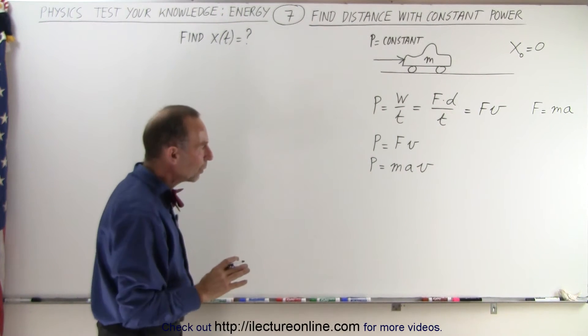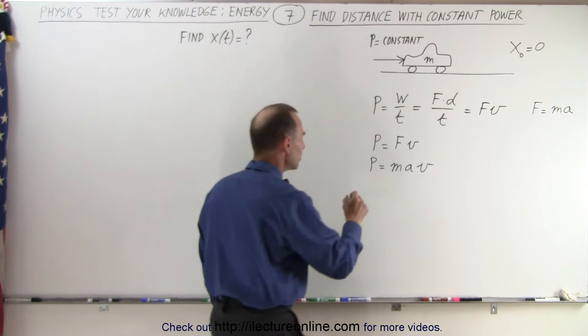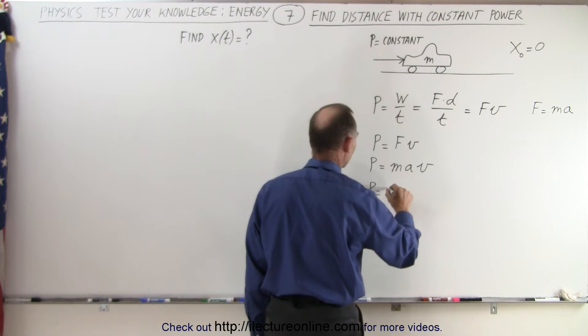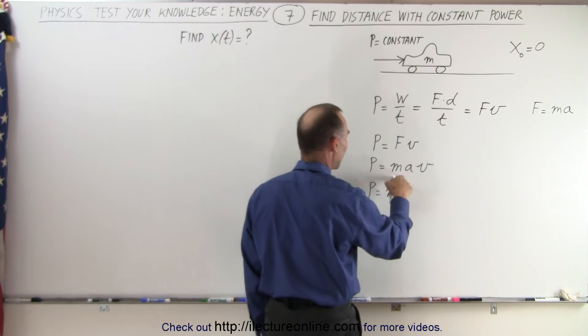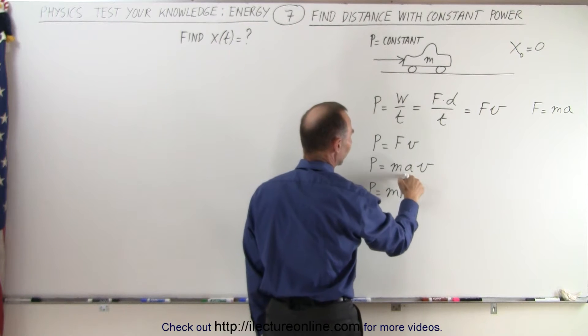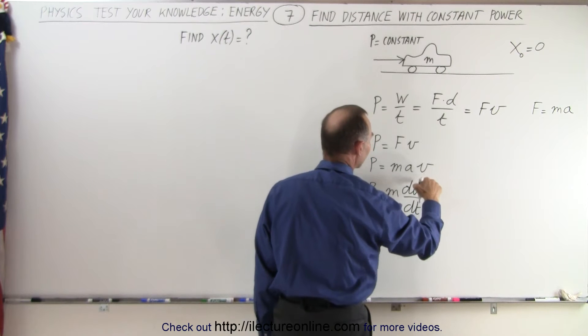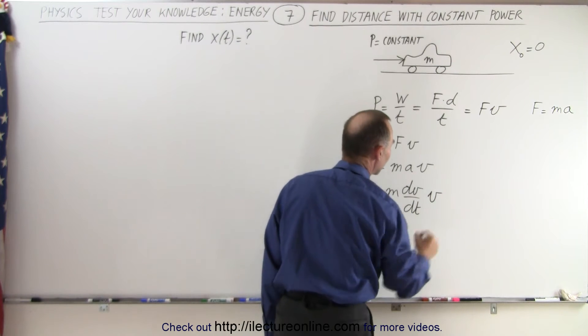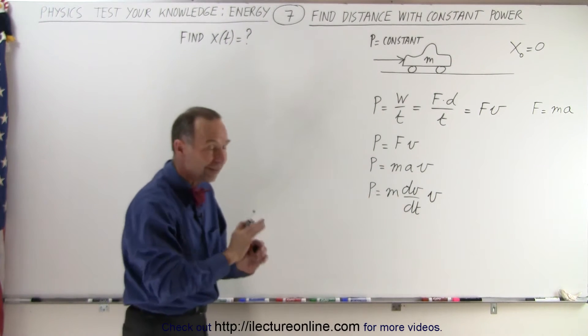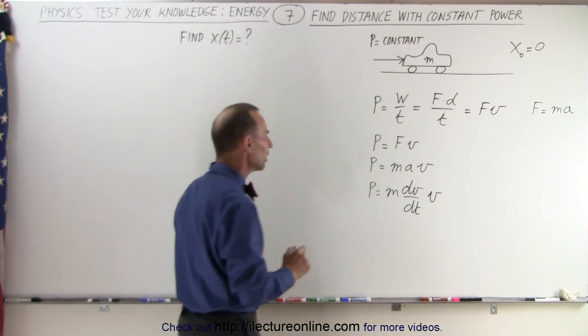And then we can write acceleration as dv/dt. So let's do that. We write power is equal to the mass—because notice power and mass are both constants, because power is constant, mass is constant. So let's write A in terms of dv/dt, because now we have v, dv, and v in the same equation and dt. So we can separate the variables and integrate both sides.